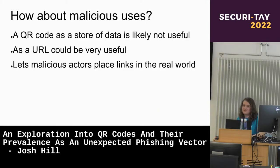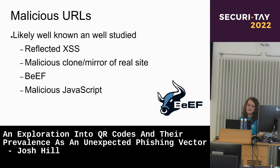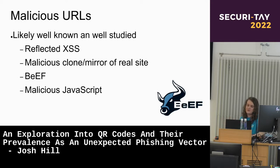So what are the malicious uses of a QR code? Storing it as raw data probably isn't going to be very useful. But as a URL that someone can scan on their phone and get taken to a malicious website, that could be potentially really useful — because it lets you place URLs in the real world where people aren't expecting to get attacked by phishing links. Generic malicious URLs could include a reflective cross-site scripting attack, a clone of the real site to harvest credentials, a BeEF server running to steal browser details, or malicious JavaScript that lets you install things or mess with their device.